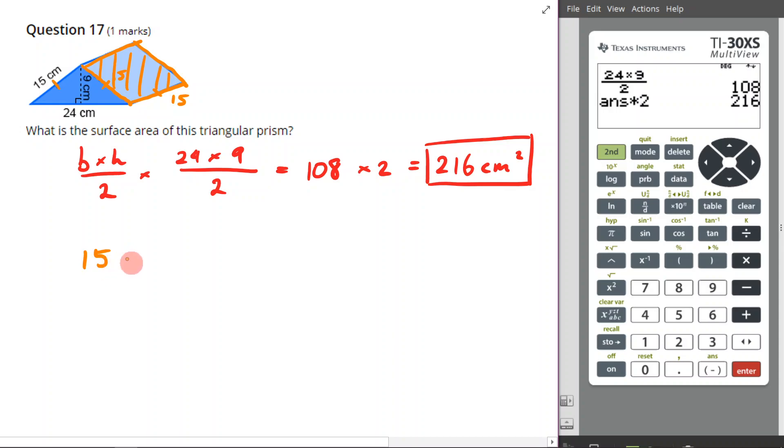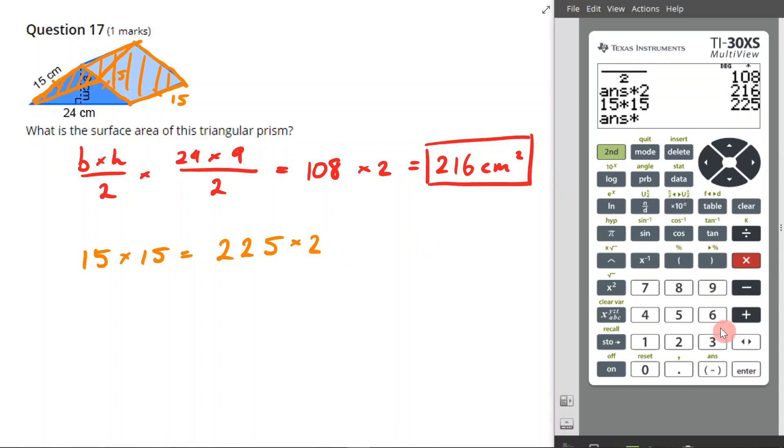I'll come to my calculator and I'll go 15 times 15 is equal to 225, 225. And again, what you have to remember is that I have another one of them back here. There's another one of these shapes. So I'm going to have to times it by 2. So that's 450 centimeters squared.